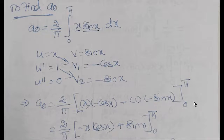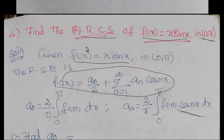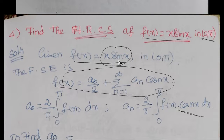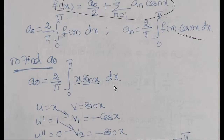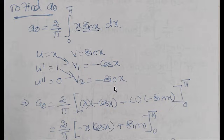Now we will find a₀. Since f(x) = x·sin(x) is a product of two functions, we will use the UV method. So a₀ = (2/π)·∫₀^π x·sin(x) dx. Let u = x and v = sin(x).